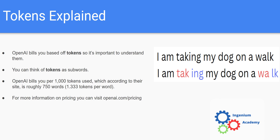Continuing through the sentence: 'my' is one token, 'dog' is one token, 'on' is a token, 'a' is a token, and then 'walk' is split — because 'wa' is used as a prefix in a lot of words, and 'lk' is used as a suffix in a lot of words. So the sentence broke up into 10 tokens.